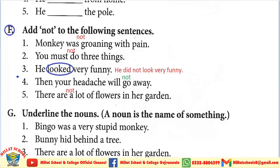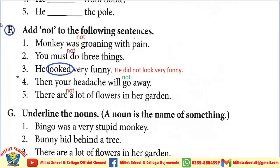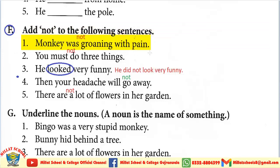Quickly open page number 31. My dear students, the rest of the exercises we have done on page number 31, so today we will do exercise F — add 'not' to the following sentences. Sentence number one: 'Monkey was crowning with pain.' We will add 'not' after the helping verb. So the answer is: 'Monkey wasn't crowning with pain' — was not, or wasn't. You can use contraction form or full form.